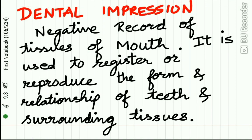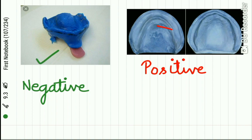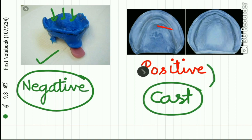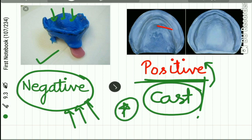By definition, a dental impression is the negative record of tissues of the mouth, and it is used to register or reproduce the form and relationship of teeth and surrounding tissues. The impression made using an impression material is the negative record of the patient. When you pour this impression with a gypsum product and form the cast, this cast is called the positive record of the patient. Casts are positive while the dental impression is the negative record.